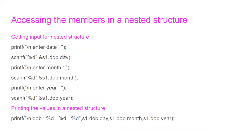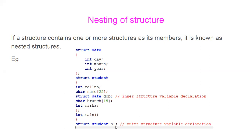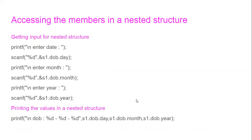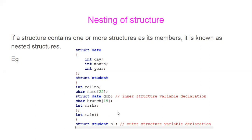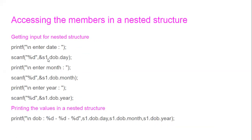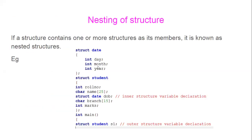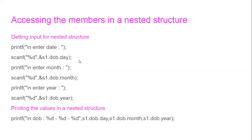So how can we access it? By using two dot operators. S1 is the outside structure, then DOB which is the inner structure. So S1 dot DOB dot day is the variable defined within the date structure. Like this — S1 dot DOB dot day, S1 dot DOB dot month, S1 dot DOB dot year — this is how you get the data for the nested structure. And printing the value is similar: S1 dot DOB dot day, S1 dot DOB dot month, and S1 dot DOB dot year.